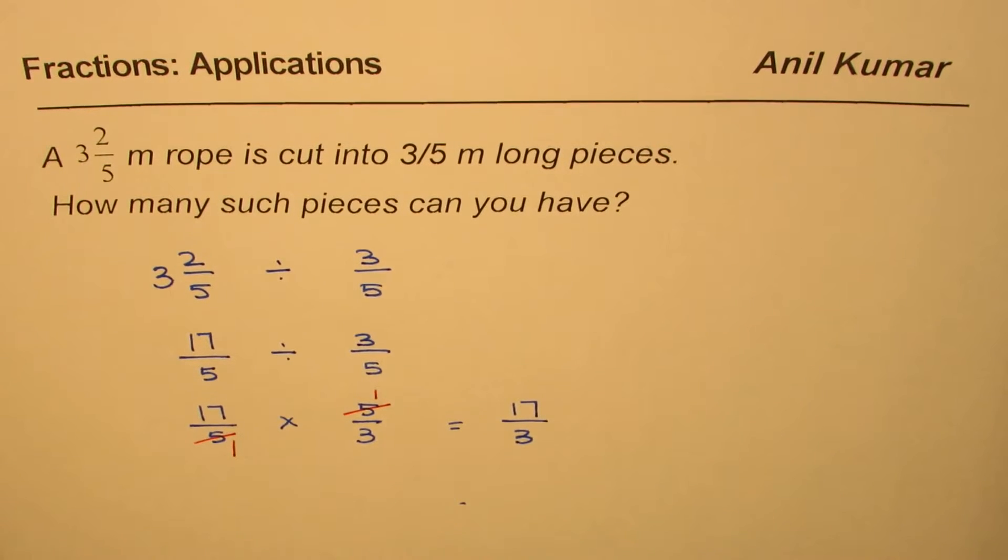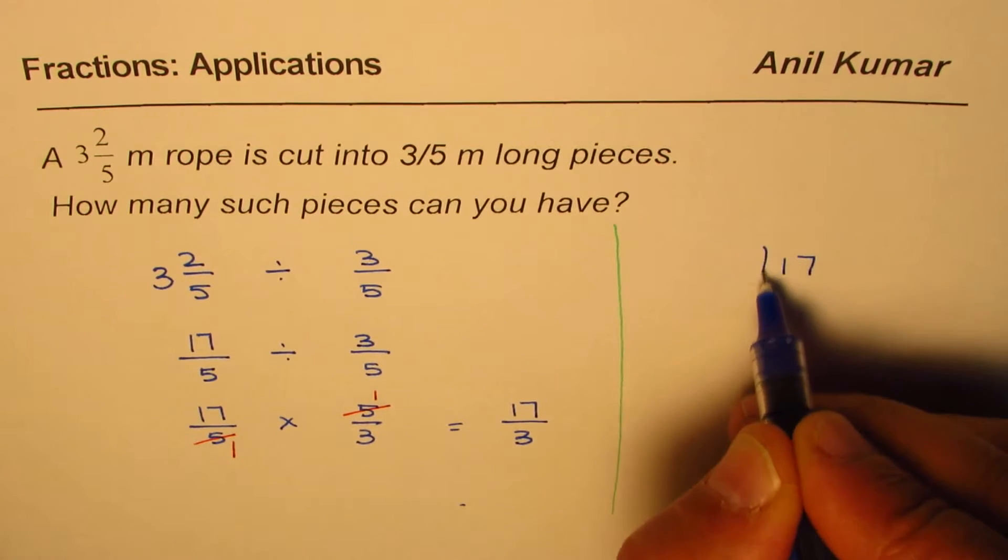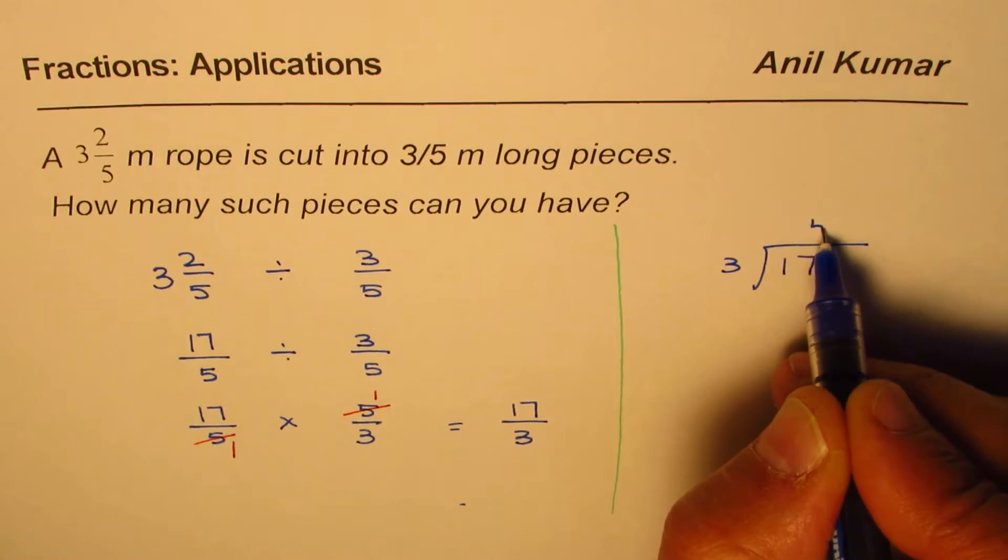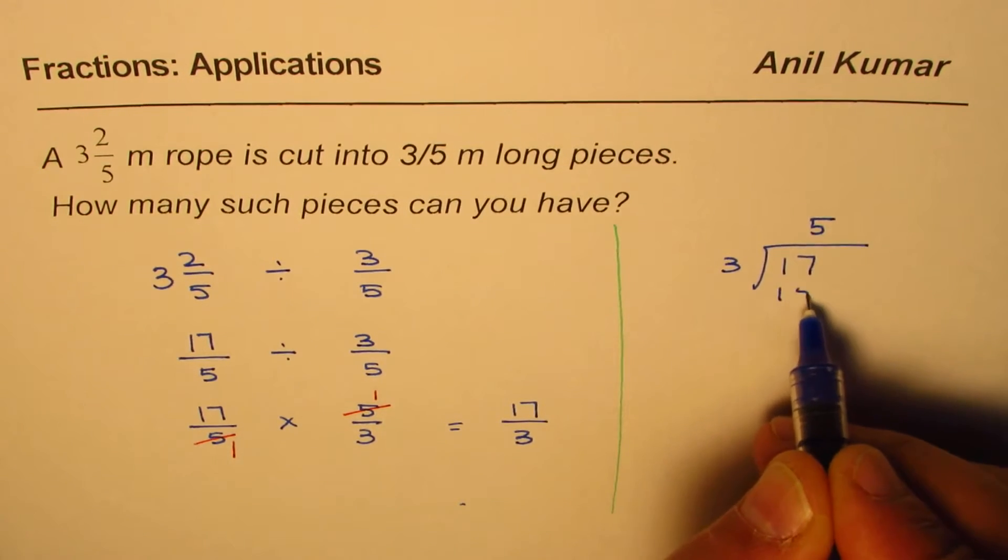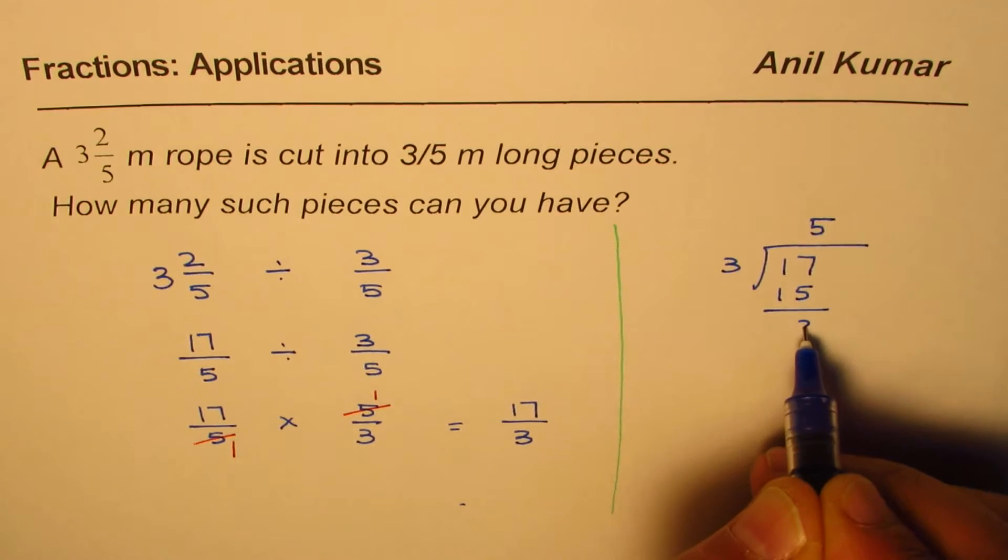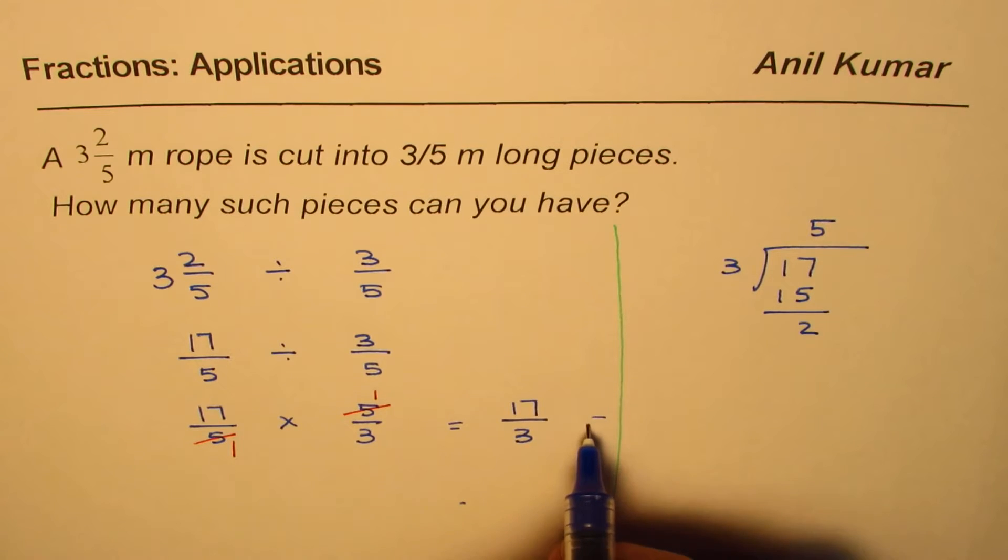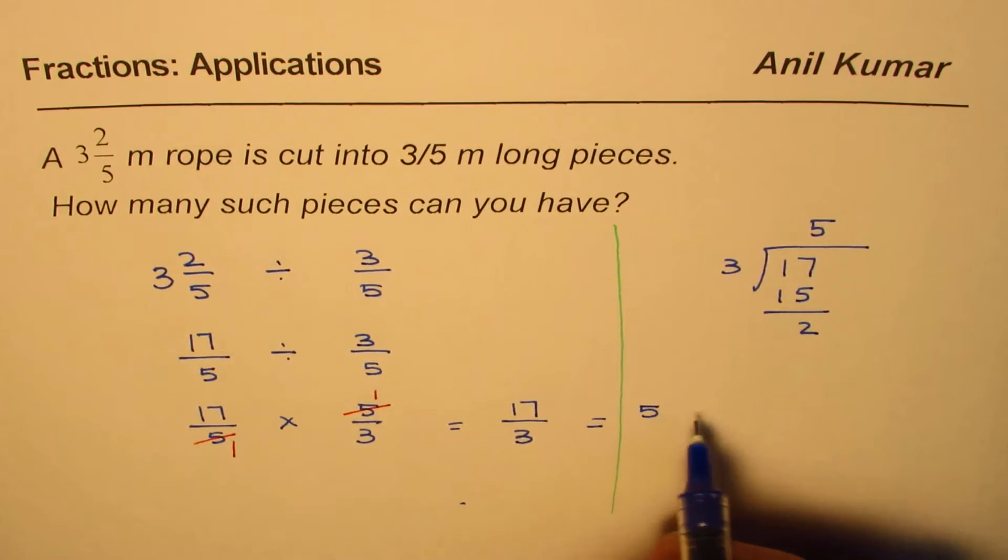Now let's convert it back into whole number of pieces. For that, we'll divide 17 by 3. 3 times 6 is 18. So it can go 5 times, right? 3 times 5 is 15. Remainder is 2. So 17 divided by 3 can be written as 5 2/3. So basically, our answer is 5 pieces.